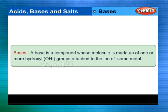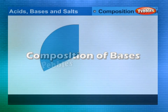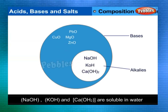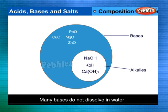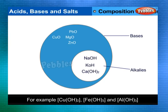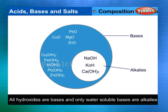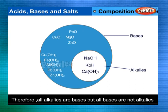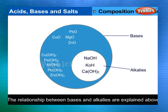Bases. A base is a compound whose molecule is made up of one or more hydroxyl (OH⁻) groups attached to the ion of some metal. Sodium hydroxide (NaOH), potassium hydroxide (KOH) and calcium hydroxide (Ca(OH)₂) are soluble in water and are called alkalis. Many bases do not dissolve in water — for example, Cu(OH)₂, Fe(OH)₃ and Al(OH)₃. All hydroxides are bases, but only water-soluble bases are alkalis; therefore, all alkalis are bases but not all bases are alkalis.